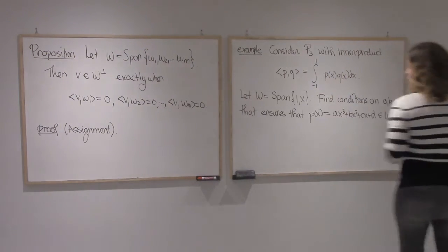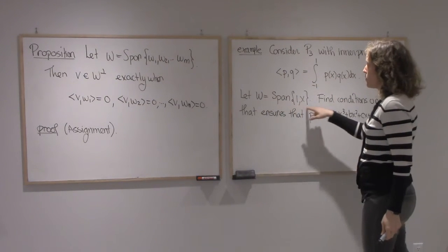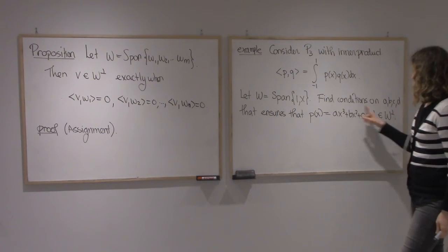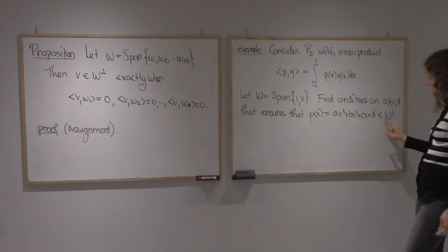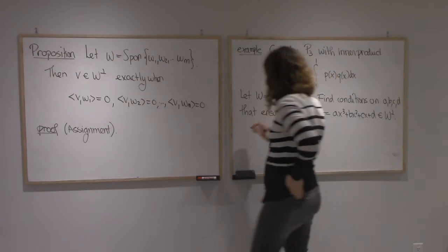Alright, so what we'll do is use this result to find the orthogonal complement of the span of 1 and x. So I'm going to find conditions on the real numbers A, B, C, D that ensure that this polynomial is in W bar.